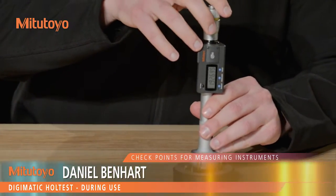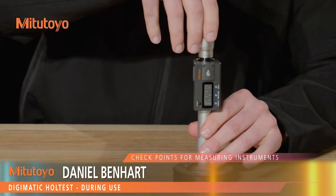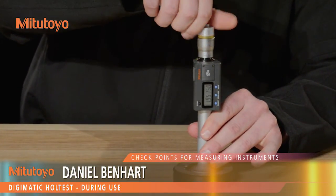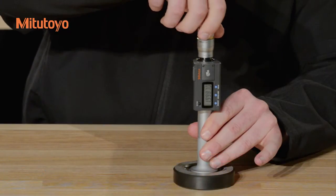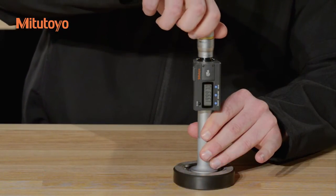To take a measurement, bring the anvils into light contact with the workpiece, then operate the ratchet five to six times to ensure constant measuring force.